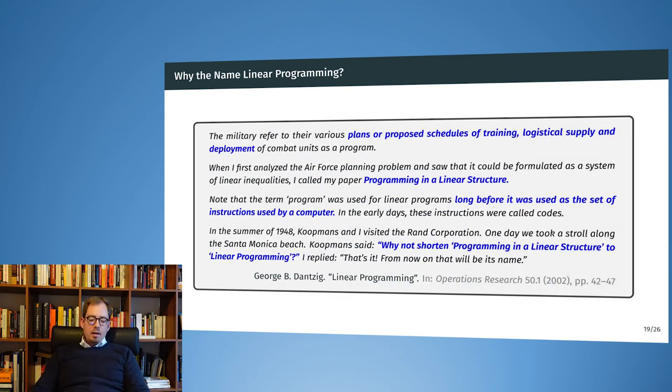Where does the name linear programming come from? If you are students of computer science, most of you, you will understand programming to be the development of computer code, of program code. But linear programming is obviously something very different. But why this overlap in naming? Actually, the programming term for linear programming is much older than the programming term for computer programming.